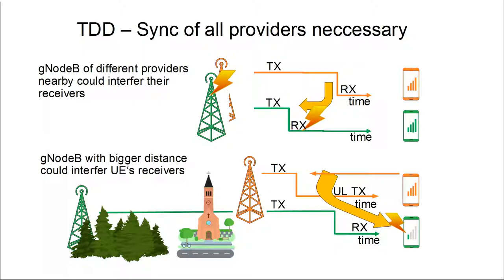With the clients it's a similar case. If the orange client is sending, the green one could not be receiving at the same time if they are lying on the same table.